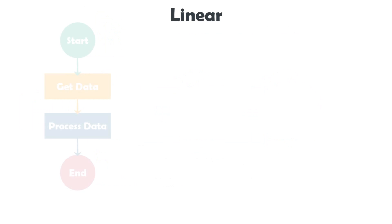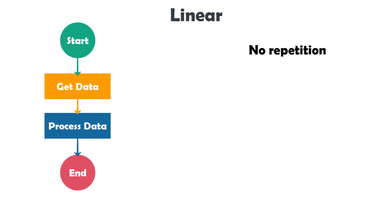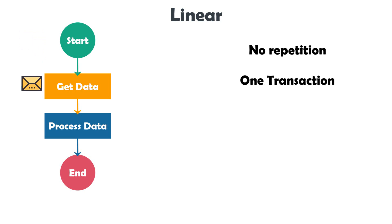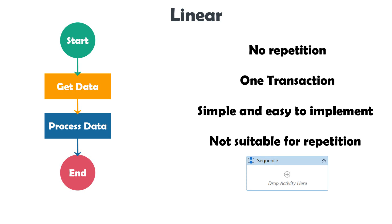Let's start with linear processes. We first read the data and then process it in different steps. The steps are performed only once, from top to bottom — there is no repetition. The data in such processes is minimal, meaning we only have one transaction. If we want to process another transaction, we need to run the process again. A common example is processes that work with emails: once an email is received, the process executes for that email. Linear processes are very simple and easy to implement, but not suitable for repetitions. We mostly implement them using sequence activity in UiPath, though flowchart or state machine can also be used.